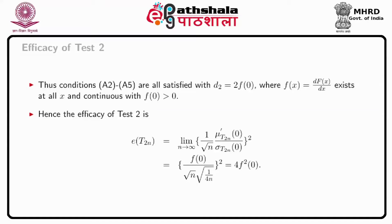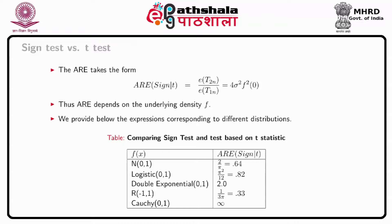Hence the efficacy of test 2 is defined by 4*f(0) squared. We can compare different pairs of tests using ARE. For the sign test relative to the t-test, the ARE is given by 4*sigma squared times f(0) squared, and naturally it depends on the underlying density f. The table gives results for specific distributions: for Normal(0,1), ARE equals 2/pi which is approximately 0.64; for Logistic(0,1), ARE equals 0.82; for double exponential distribution, ARE equals 2.0; for Rectangular(-1,+1), ARE equals 0.33; and for Cauchy(0,1), ARE equals infinity.